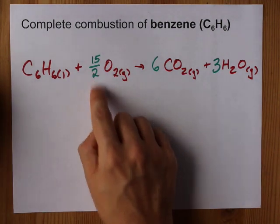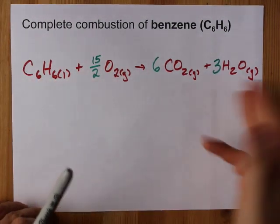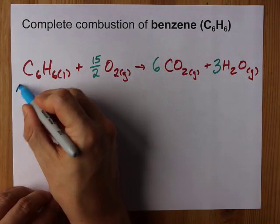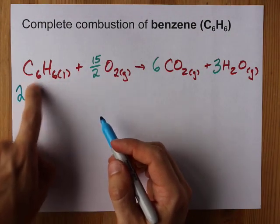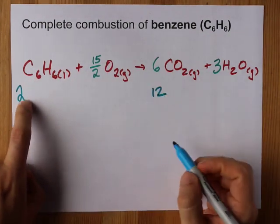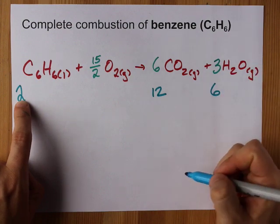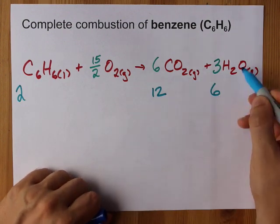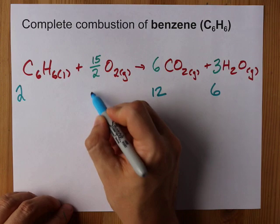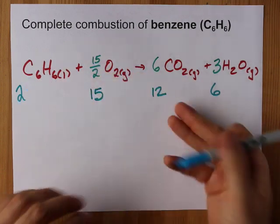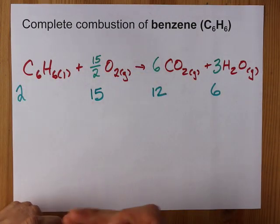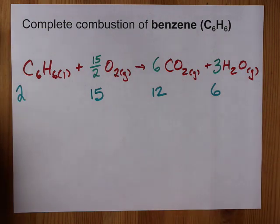But if your teacher doesn't let you use fractions or decimals, you just double all those coefficients. Two benzenes gives me 12 carbons and 12 hydrogens, that's 6 pairs. Now I have 24 and 6 is 30 oxygens, that's 15 pairs. Oh look, everything just doubled with these new coefficients that I put in a different color for you.